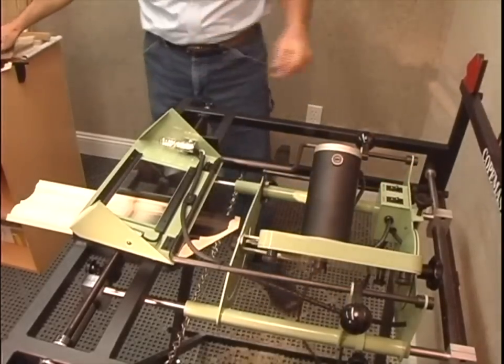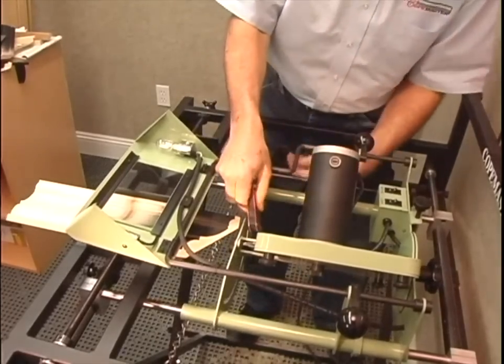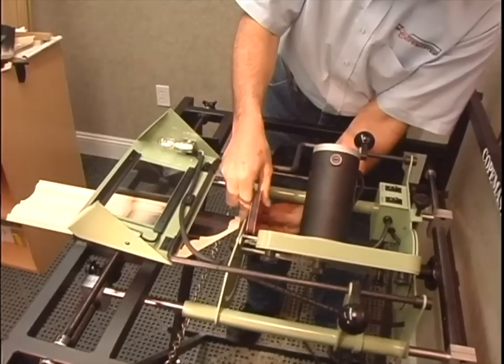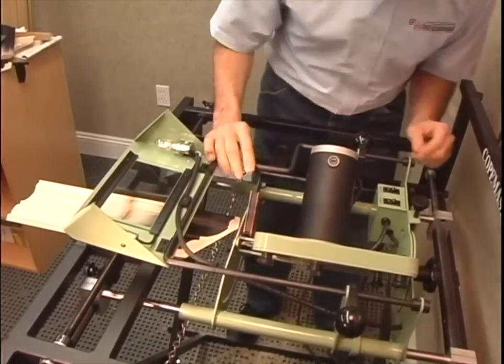As an alternate to a framing square, you can use a magnetic welder square. The motor side faceplate is steel and will hold the magnetic square in place, making it easier to set the angle.